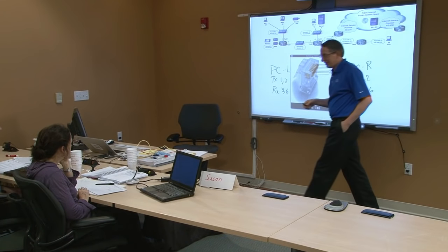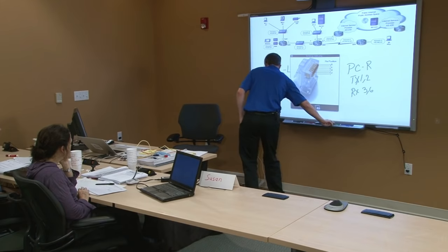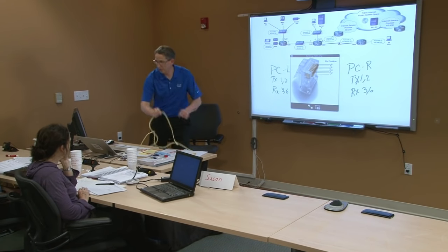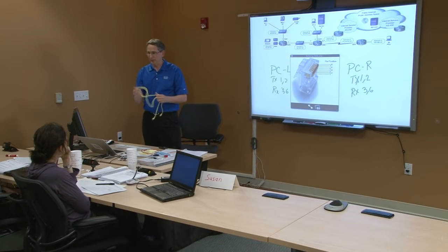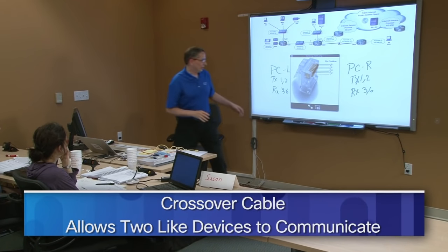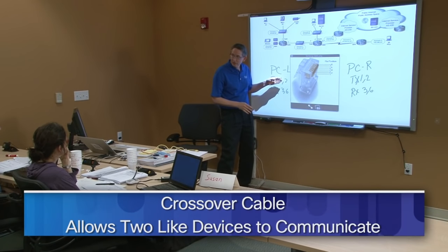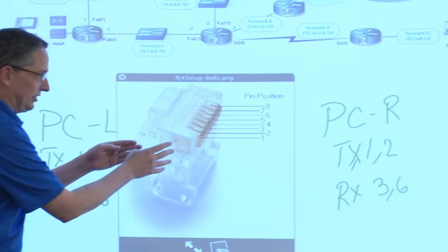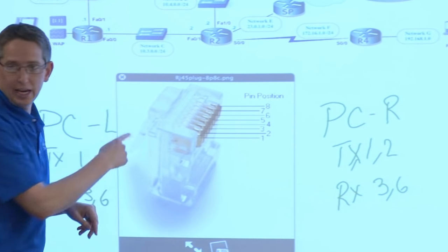So how do we fix that? We fix that by lying to both sides. And we do that by removing the straight-through cable that we had, and we'll put in something called a crossover cable. So if this guy is talking on one and two and expecting to listen on three and six, what would happen if we just swapped the pins on either end of the cable? Let me go ahead and show you that graphic.